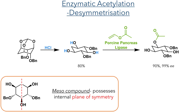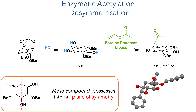In the next step, the authors carried out an enzymatic acetylation which de-symmetrizes the molecule. While the previous compounds all contain many chiral centres, these compounds are not optically active as they are meso compounds — they possess an internal plane of symmetry. By reacting the compound with vinyl acetate using porcine pancreas lipase, they could selectively react one of the hydroxyl groups, forming a chiral product with 90% yield and 99% ee. They were able to confirm the stereochemistry of this product using X-ray crystallography.